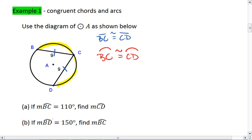We're told that if arc BC is 110 degrees, we want to find the measure of arc CD. Well, if BC is 110 degrees, then the measure of arc CD must also be 110 degrees.